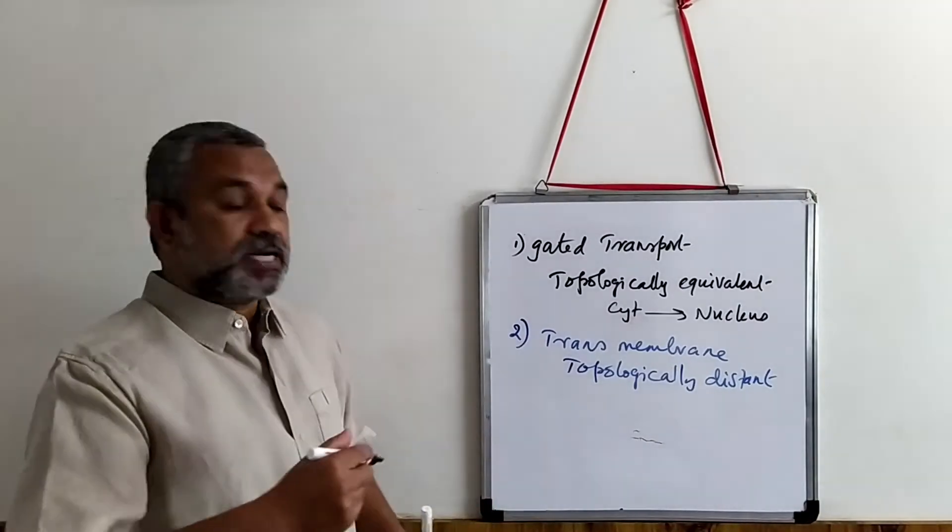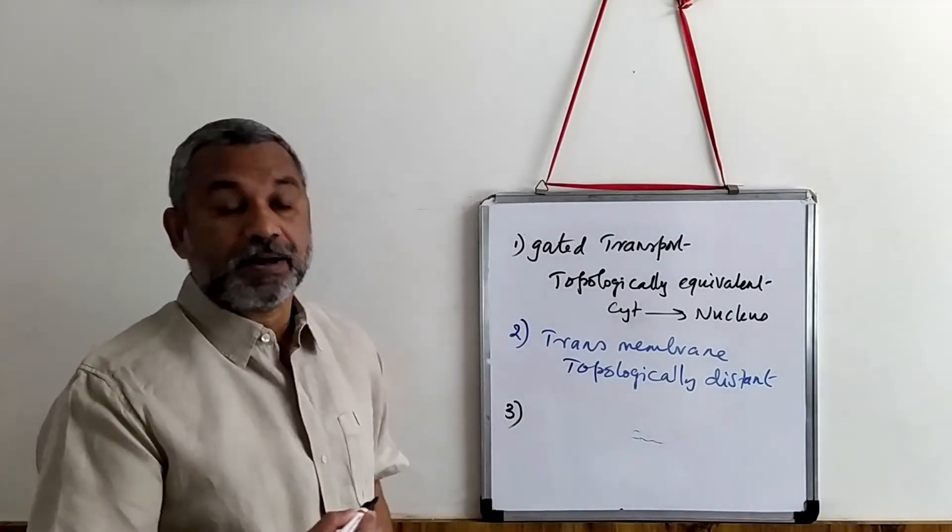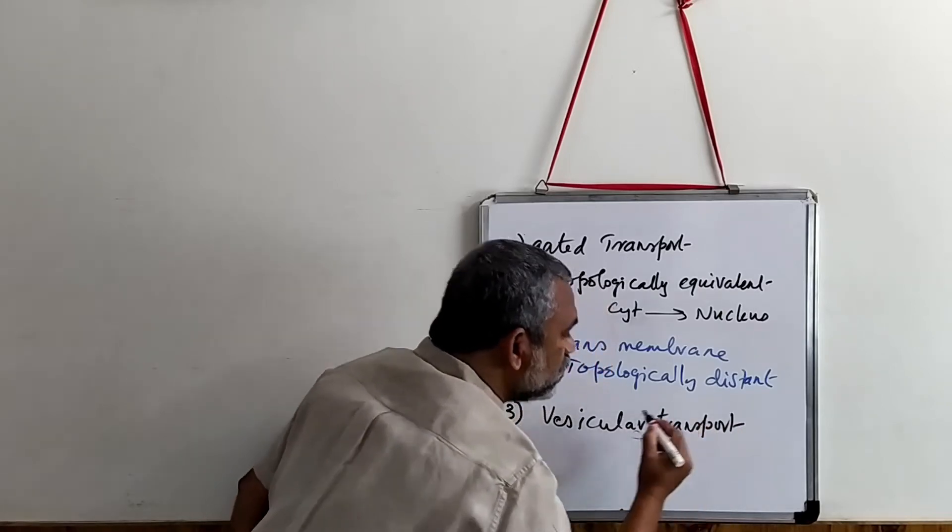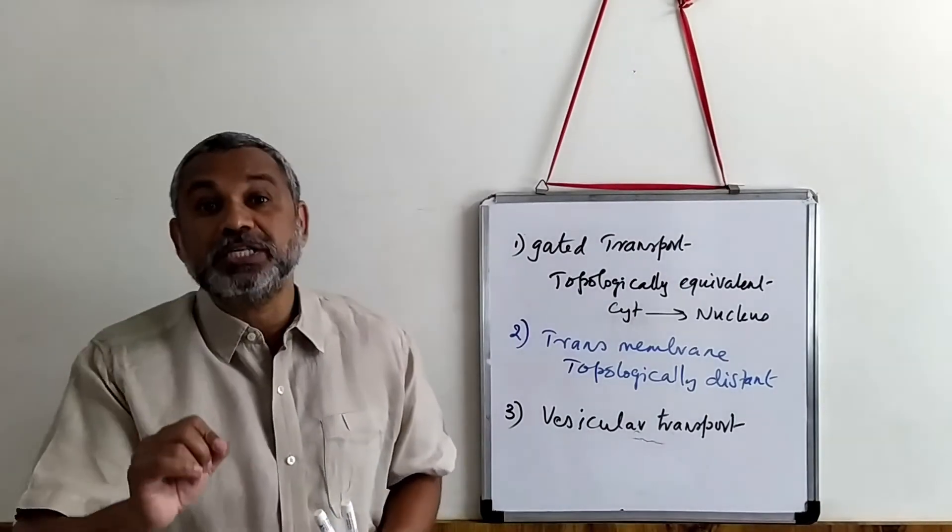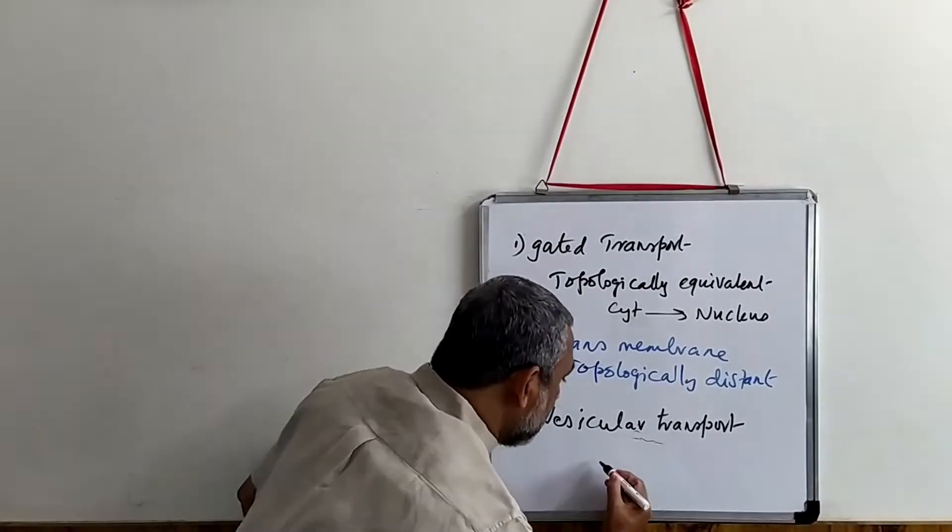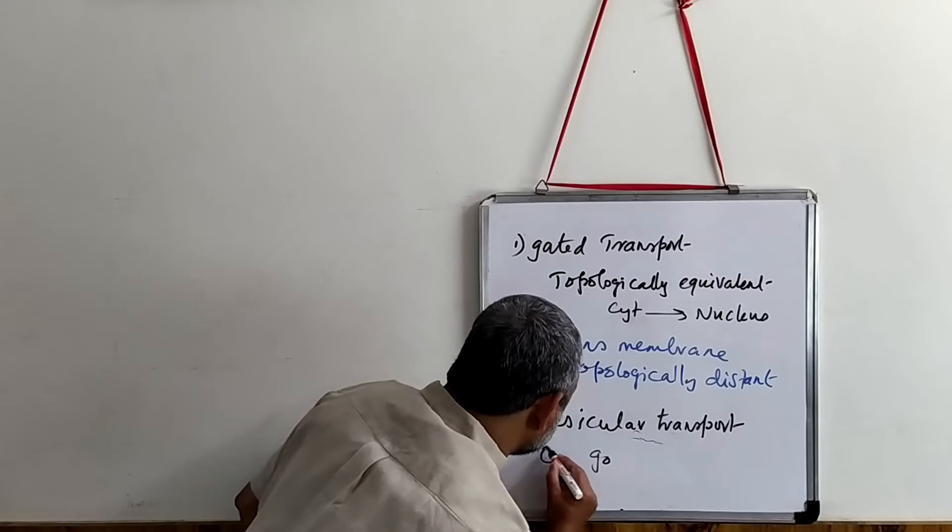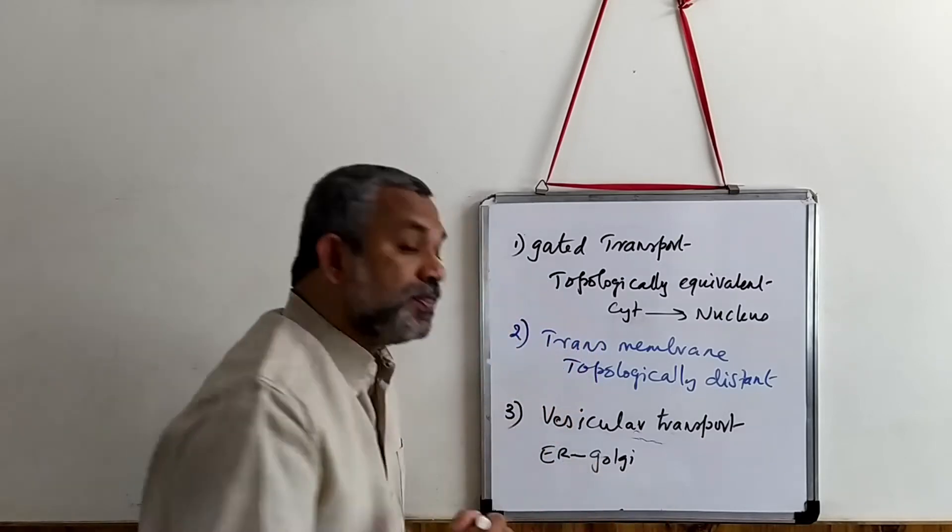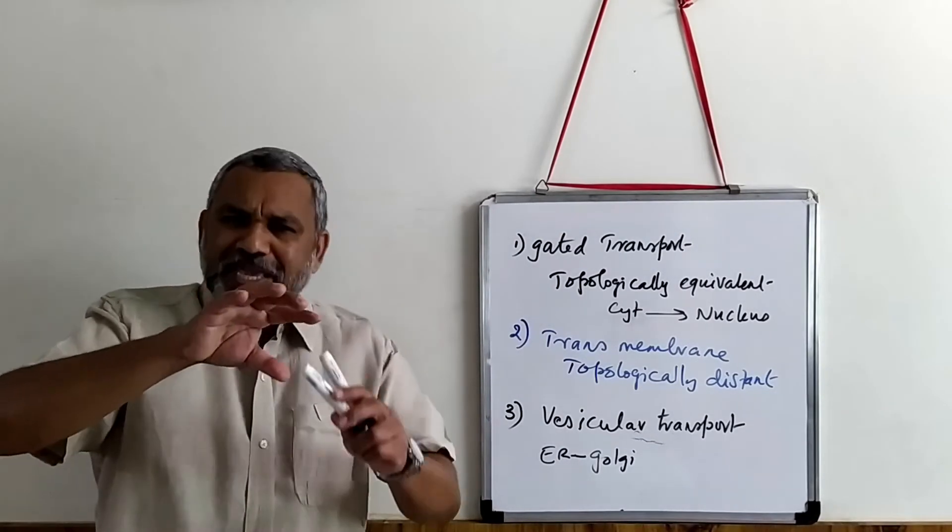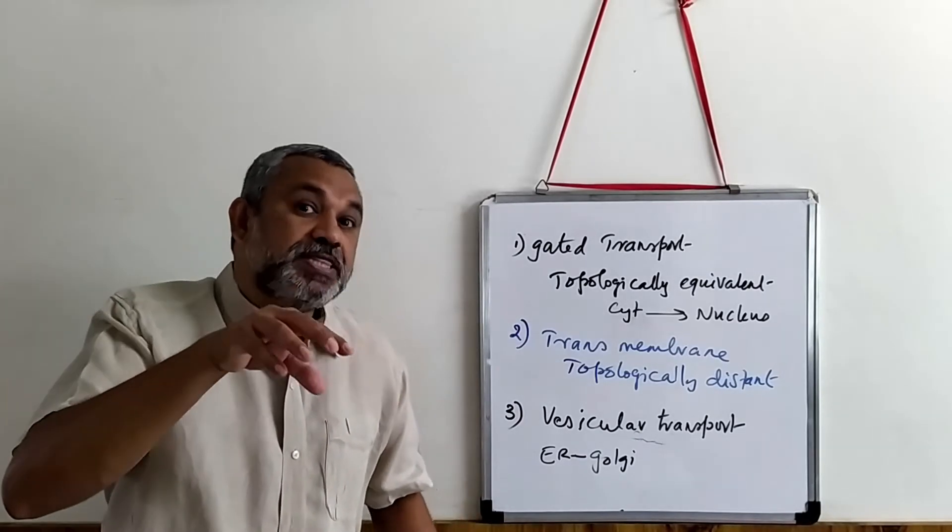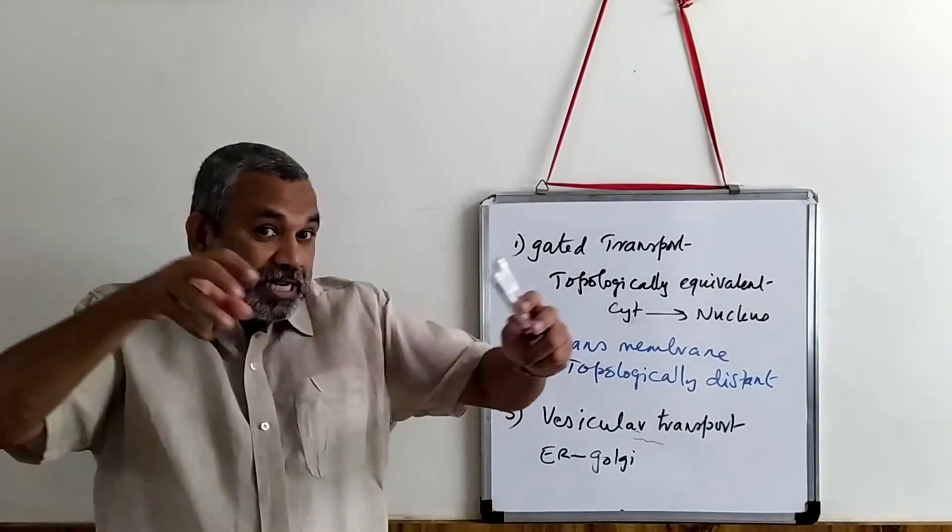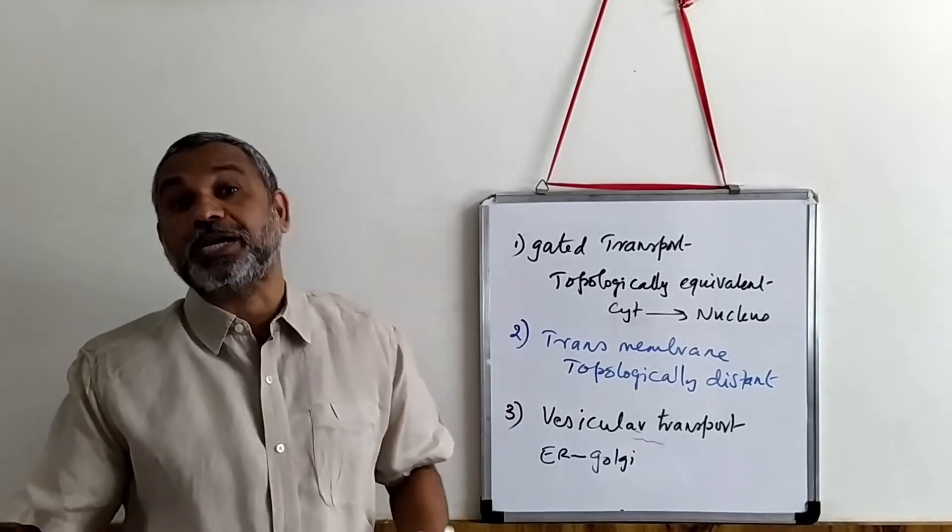And the third type of transport mechanism is vesicular transport. What happens in vesicular transport is it is again topologically equivalent to topologically equivalent space. For example, endoplasmic reticulum to Golgi bodies. This is an example of vesicular transport where the protein to be transported forms a vesicle and it gets fused with the membrane of the Golgi bodies. It is a kind of pinching off, getting attached, getting merged, and that is how the protein is transported.